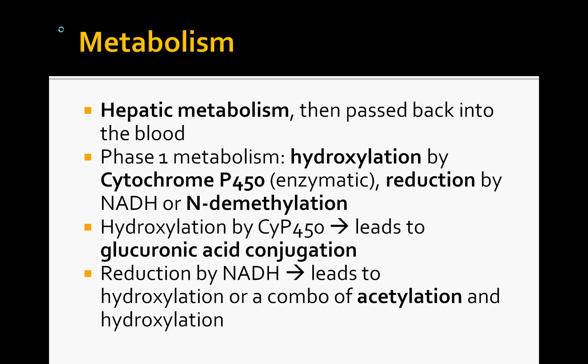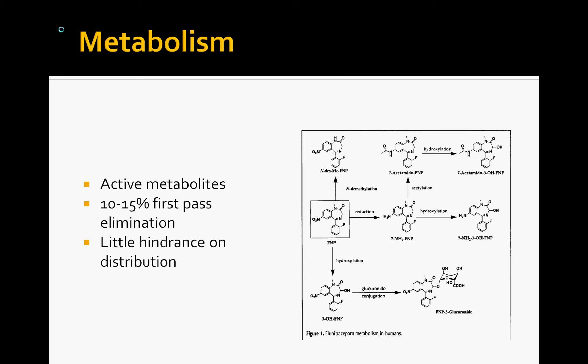It's metabolized by the liver. It can be hydroxylated by cytochrome P450, reduced by NADH, or demethylated. The center row on the far left is flunitrazepam, the parent molecule, and there are three metabolic pathways from here. Toward the bottom left is hydroxylation by cytochrome P450, ultimately conjugated by glucuronic acid and excreted by the kidneys. The top left is the first active metabolite, created by demethylation. In the reductive pathway, 7-aminoflunitrazepam can be acetylated — forming an inactive metabolite — or hydroxylated, forming the second active metabolite, 7-amino-3-hydroxyflunitrazepam.